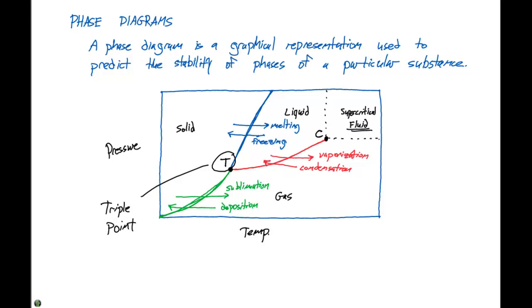This is the point at which we have equilibrium between all three phases. At any other point on the graph, we have an equilibrium between two phases. But at the triple point, our substance exists in equilibrium of all three phases.